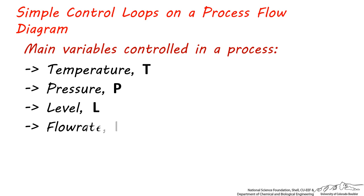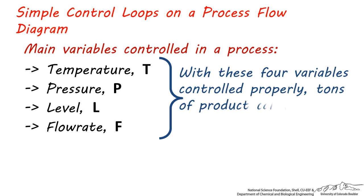There are four main variables which are usually controlled in a process: temperature, pressure, level, and flow rate. These four variables are very important because when they are properly controlled in a well-designed process with correctly sized equipment, hundreds of tons of product can consistently be made 24 hours a day, 7 days a week.